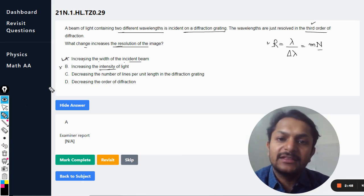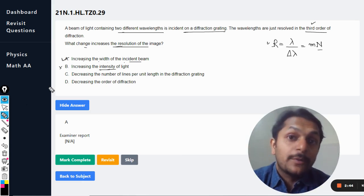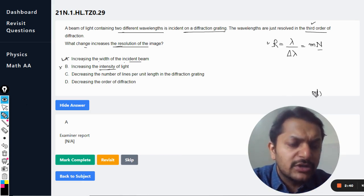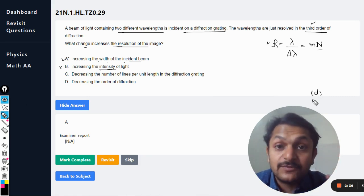Okay, so many students are confused with this option, like what is happening here. So there is no term which is talking about the small d. The d is the gap between the two slits, as we were doing in the interference, isn't it? It is the same d. Now they say that decreasing the number of lines per unit length means the d is increased. So what is the effect of d on the resolution?